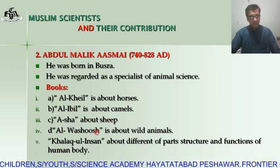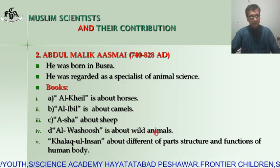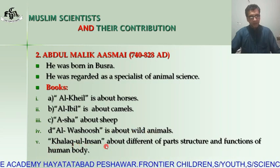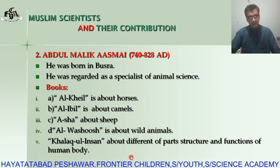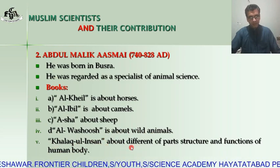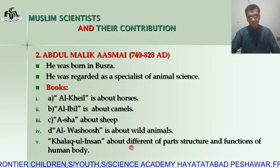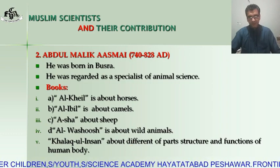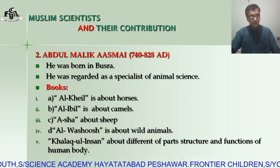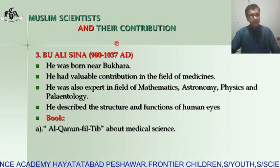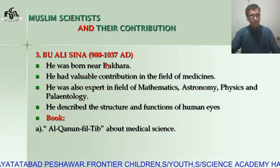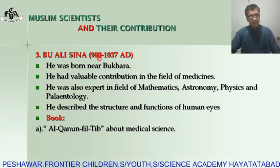Al-Wahoosh was about wild animals, and Khalq al-Insan was about human beings. In this book, he discussed different parts, structure, and function of the human body. The next Muslim scientist is Bu Ali Sina.